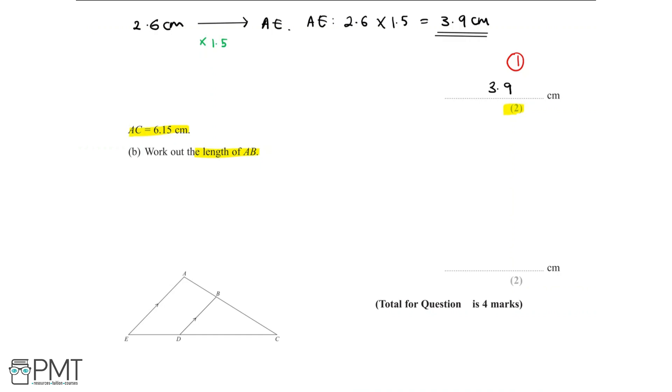We calculated that the scale factor to get from any length in triangle DBC to its corresponding length in triangle AEC, we need to multiply by 1.5. So we can see that line AC is equal to 6.15cm. But now looking at the question, we're asked to find the length AB, and AB is not a part of either of the triangles. AB is a different segment altogether.